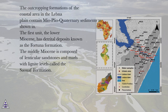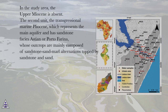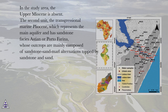The outcropping formations of the coastal area in the Lebna Plain contain Neogene-Quaternary sediments as shown in the figures. The first unit, the lower Miocene, has detrital deposits known as the Fortuna Formation. The middle Miocene is composed of lenticular sandstones and marls with lignite levels called the Sauve Formation. In the study area, the upper Miocene is absent. The second unit, the transgressive marine Pliocene, represents the main aquifer and has sandstone facies of the Astian or Porto Farina type.